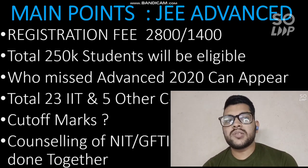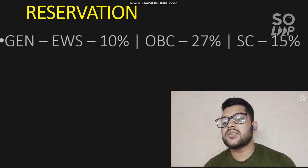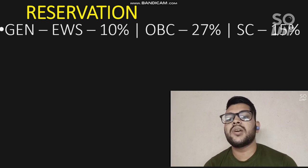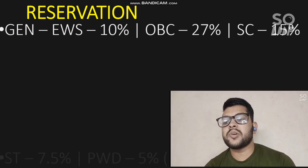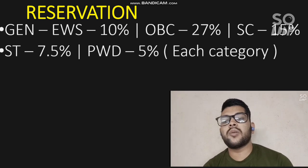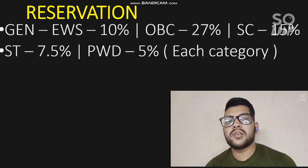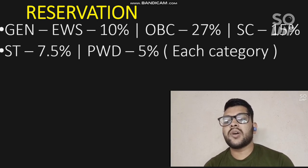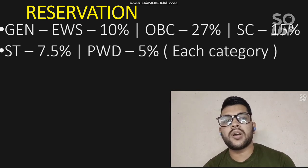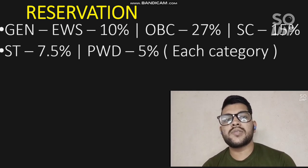Now I will talk about reservation — listen carefully. General EWS reservation is 10%, OBC 27%, SC 15%, and ST 7.5%. For PWD students, the reservation is 5% within each category. For example, if you are from General or EWS, there will be 5% of those seats reserved for PWD candidates — i.e., General-EWS-PWD — and the remaining seats will be for general candidates. It is very advisable to do counseling very carefully given these multiple reservations.